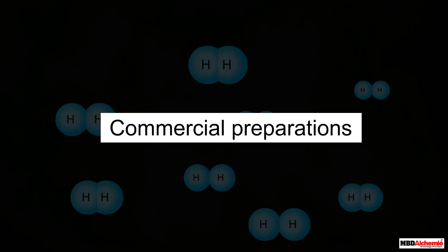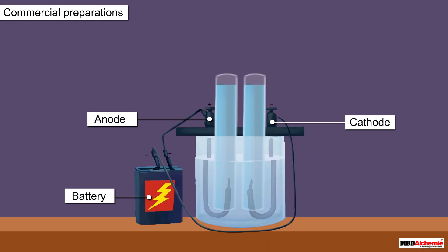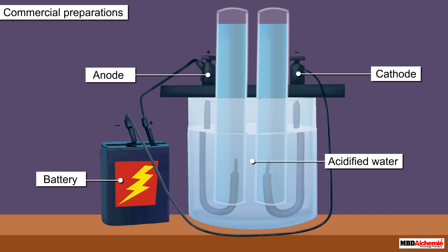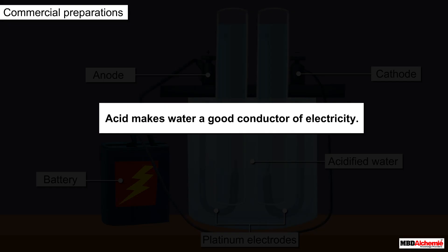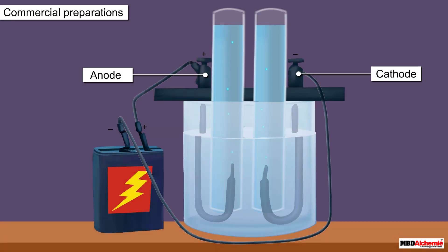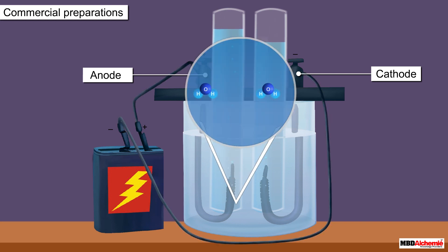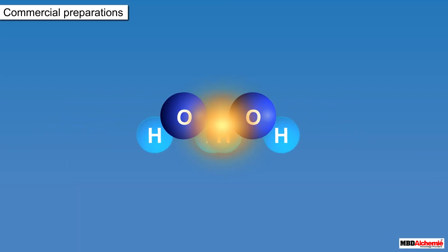The best commercial method of preparation of dihydrogen is the electrolysis of water. This process is carried out with acidified water in the presence of platinum electrodes. Acid makes water a good conductor of electricity. During the electrolysis of water, electricity is passed through the acidified water.